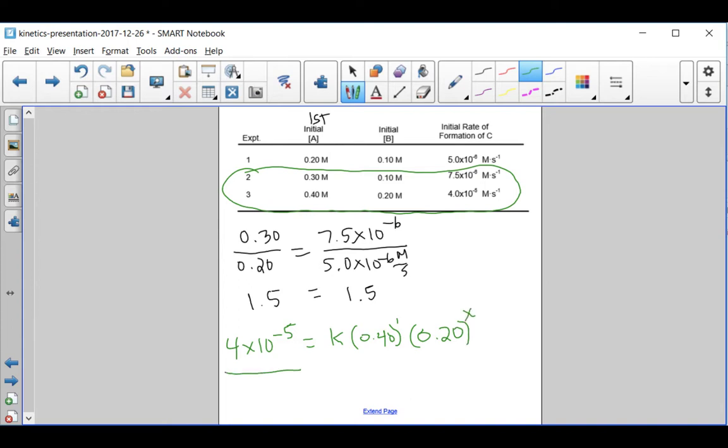Let's set up a proportion of that rate law to the rate law for the second experiment. We have 7.5 times 10 to the minus 6 equals K times 0.30. Again, it's first order with respect to A times 0.10 to some power x.